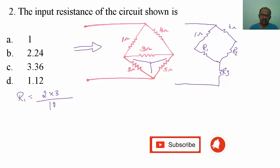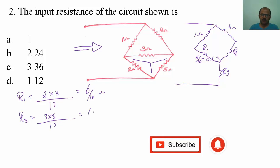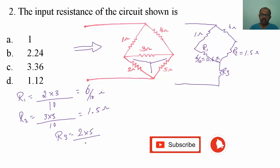R1 equals 2 times 3 divided by 2 plus 3 plus 5, which is 10. So R1 equals 6 divided by 10, which is 0.6 ohms. R2 equals 3 multiplied by 5 divided by 3 plus 5 plus 2, which is 10, giving R2 equals 1.5 ohms. R3 equals 5 times 2 divided by 10, which gives R3 equals 1 ohm.